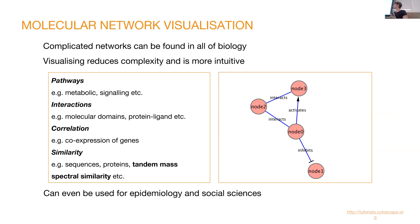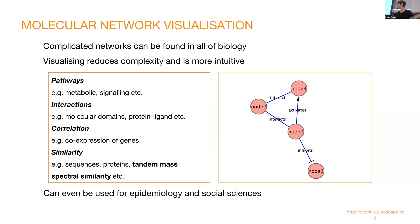You can visualize to reduce the complexity of these data sets for more intuitive interpretation and exploration. This can be for signaling pathways, metabolic pathways. You can also visualize interactions — protein-protein, protein-ligand, protein-molecular domain, all these things, as well as correlation of expression of genes. And finally, for what we're primarily looking at here, similarity — such as sequence similarity, but in our case also tandem mass spectral similarity.